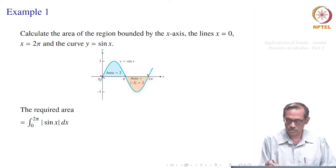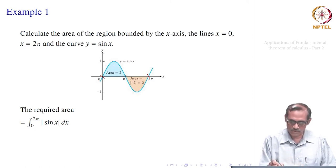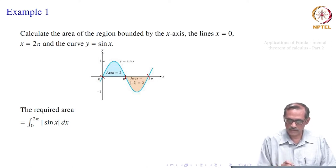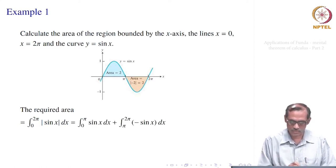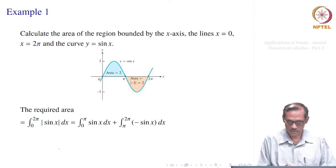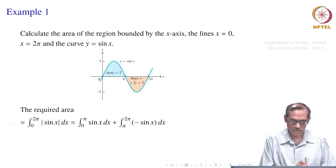The function sin x changes sign at x = π. From 0 to π, y = sin x remains positive, and from π to 2π it becomes negative. So |sin x| equals sin x on [0, π] and -sin x on [π, 2π]. We break that into two integrals: integral from 0 to π of sin x plus integral from π to 2π of (-sin x). Their sum is the required area.